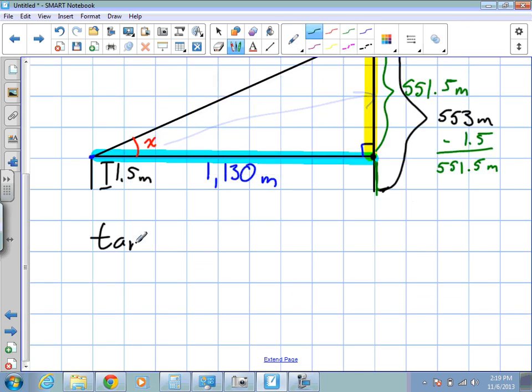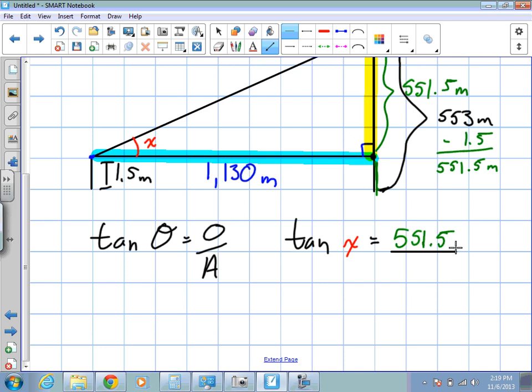So tangent theta is equal to opposite over adjacent. Let's fill in our info. What's theta in this question? X. So we have tan X is equal to what is the opposite measurement? 531.5. And what is the adjacent measurement? 1,130. There we go.